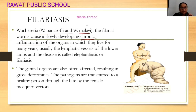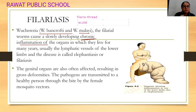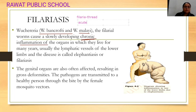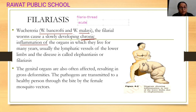Acute infection means short-term, like a common cold — it lasts for a short time, then our immunity fights the virus, produces antiviral proteins, and we recover. But chronic infection persists for a long time and affects any organ over an extended period.